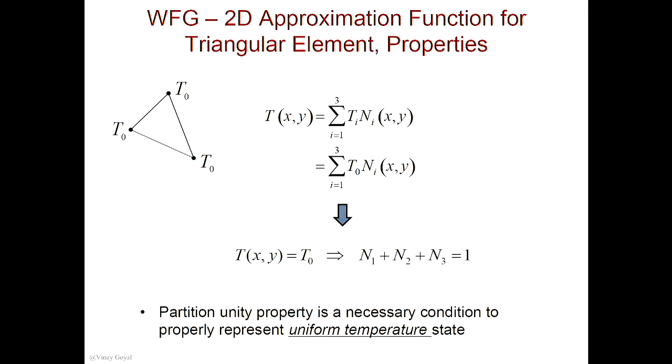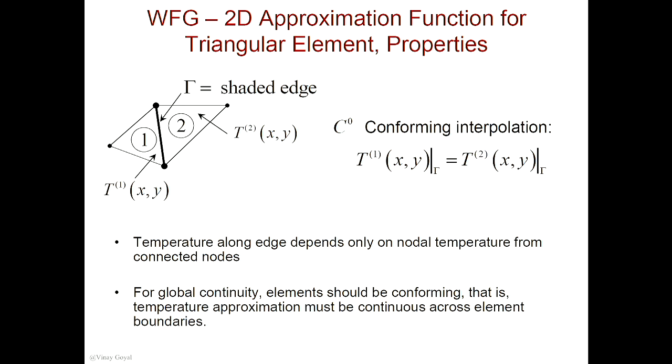Together, these two requirements constitute the convergence and completeness requirements for this element. So this triangular element — I've shown you basically I can represent constant temperature states, and I can represent a constant gradient. These two things together — the fact that I can do that in the most simplest element — I'm now able to make sure that we have the completeness requirements met. I covered this already with 1D, but I'm showing you how this looks like for 2D.